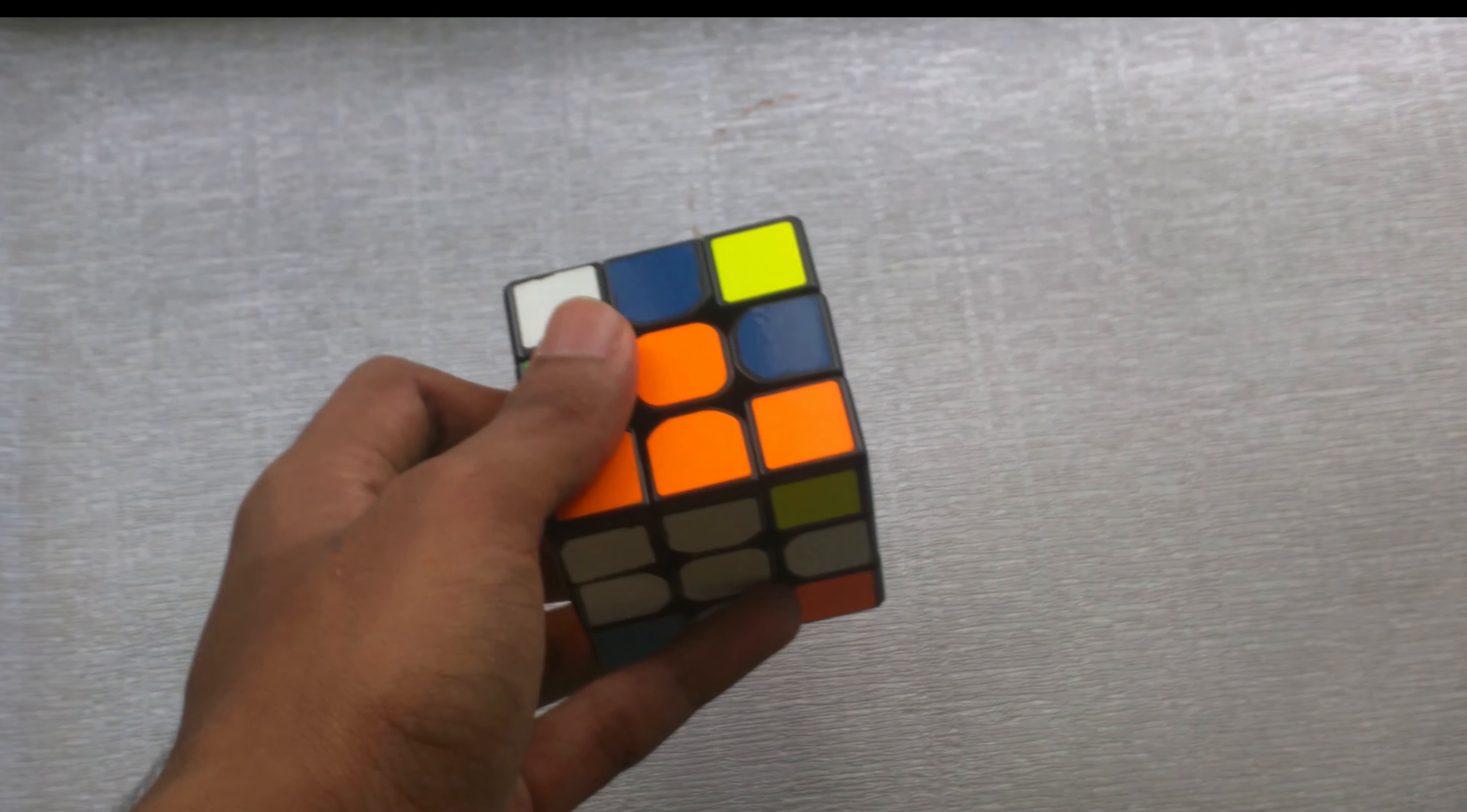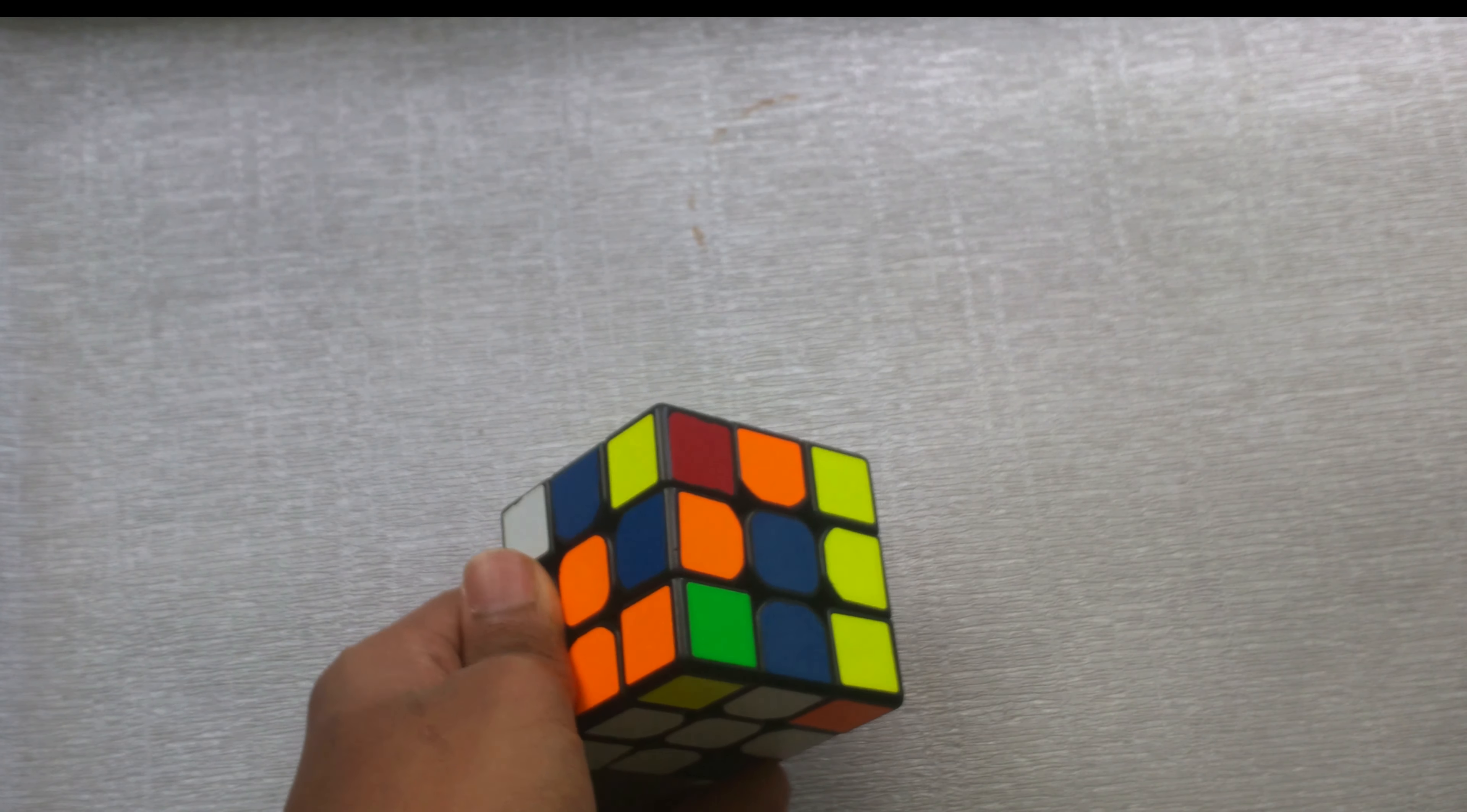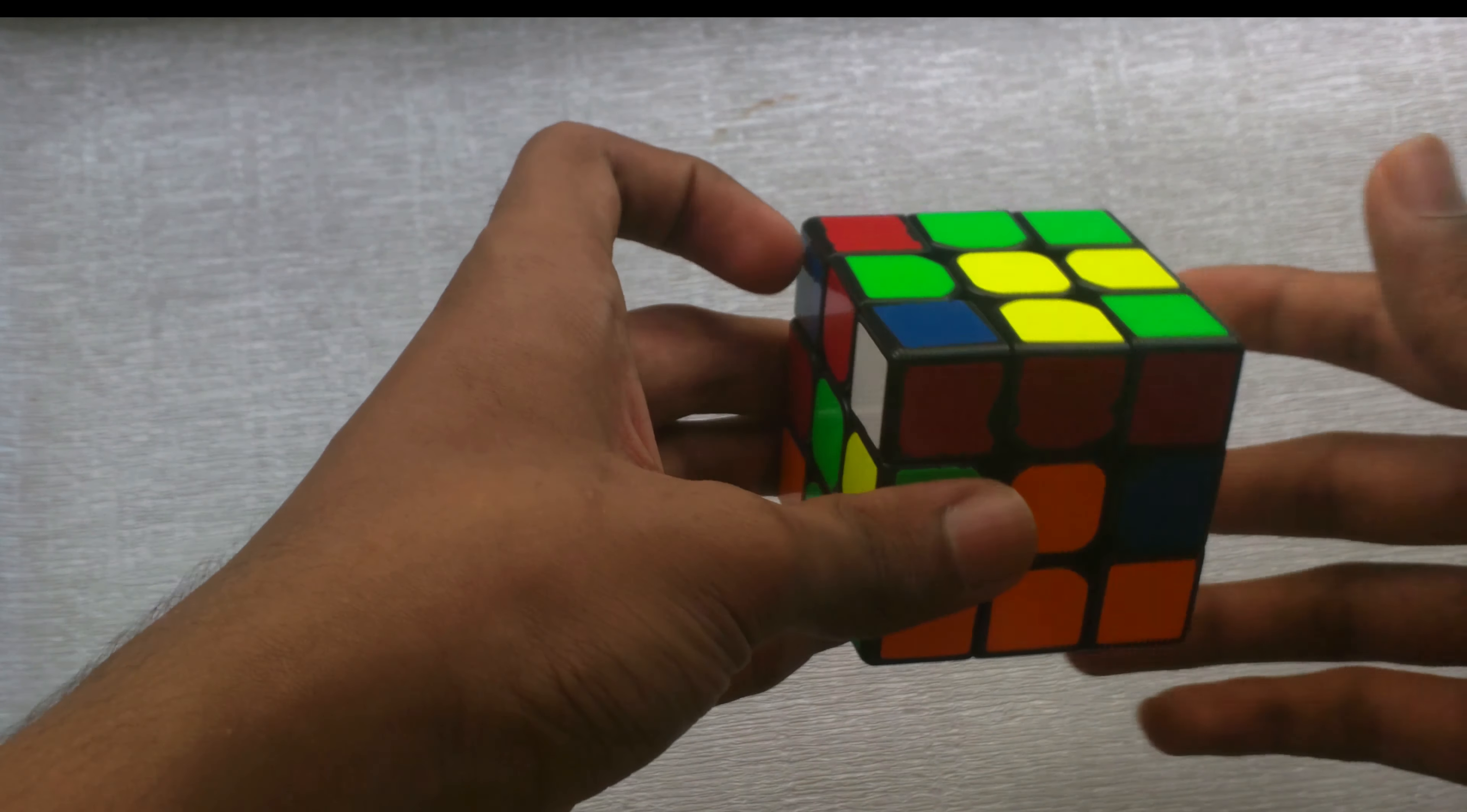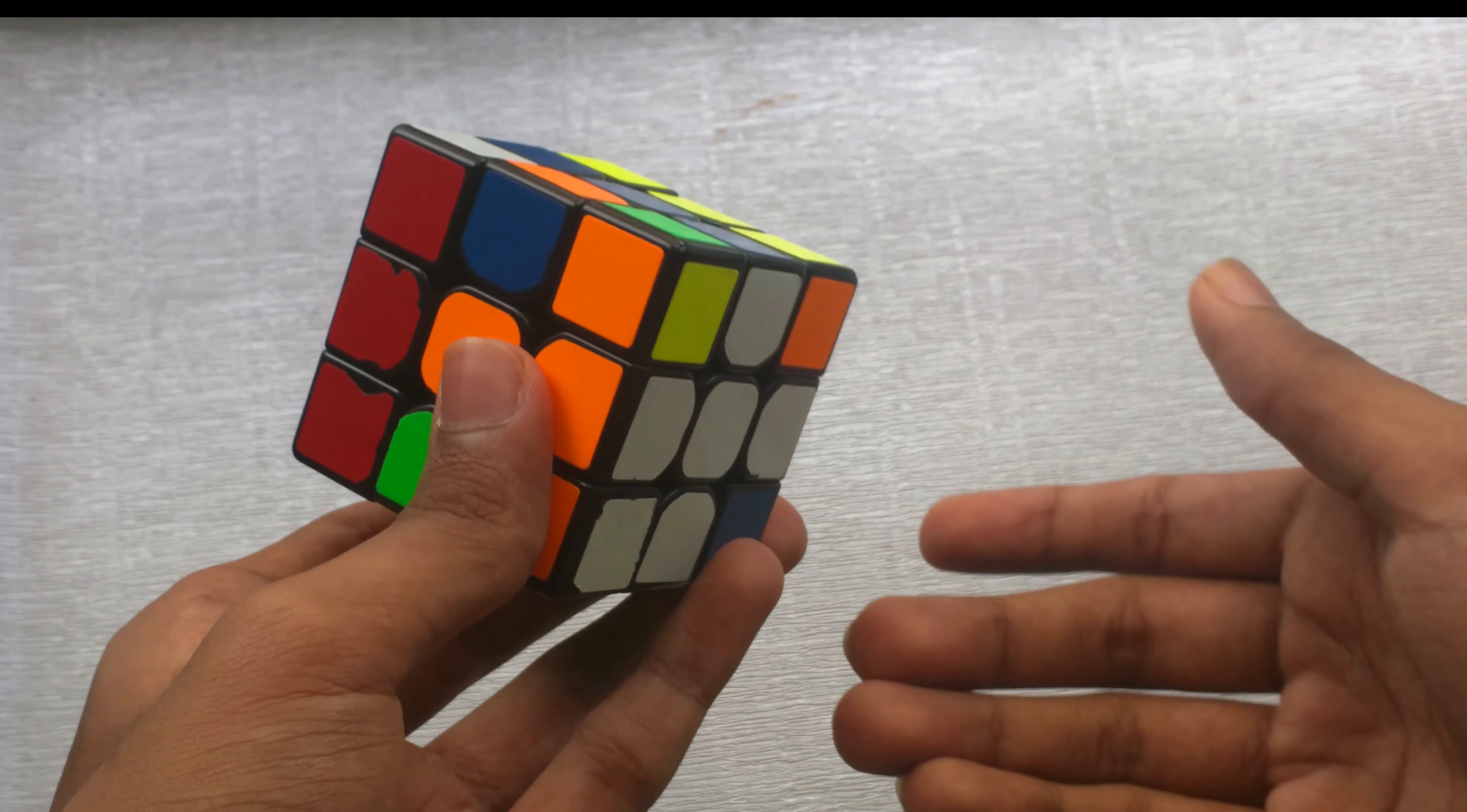Next is the F2L. This is the more complicated part. There are many F2L cases and you can learn all of them, but I just like to make it as intuitive as possible. So you can just do this. First of all, you want to find a corner piece that you want to put in the bottom layer.